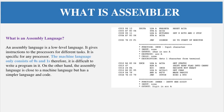Now we have to understand what is assembly language. Assembly language is a low-level language. It gives instructions to the processor for different tasks. It is specific to any processor. Machine language is normally written in zeros and ones and it directly communicates with the hardware.